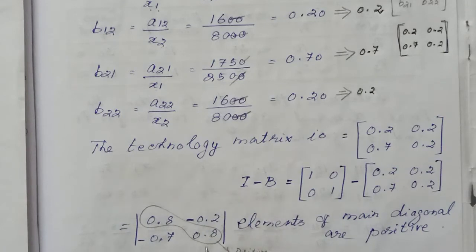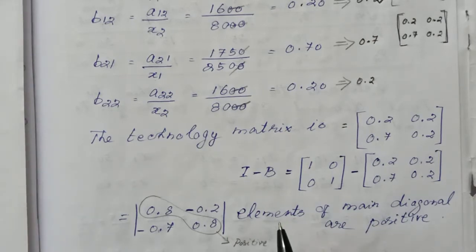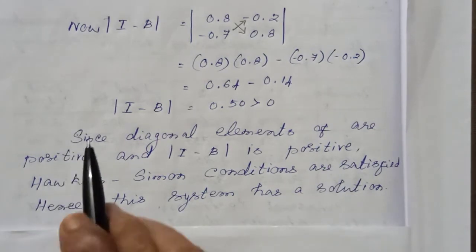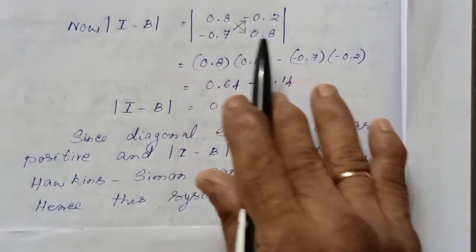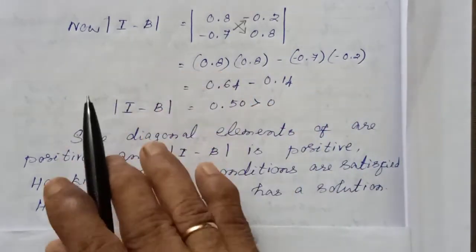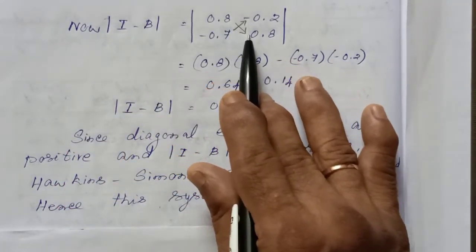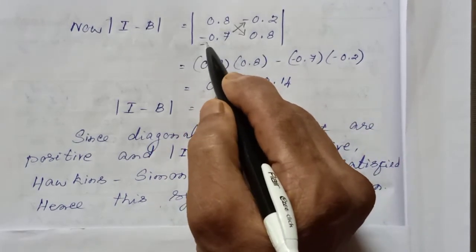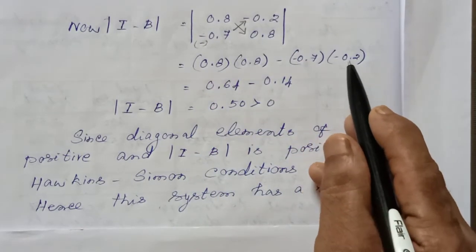The elements of the main diagonals are positive. Now, I minus B in determinant form: the matrix I minus B has diagonal element 0.8, with off-diagonal elements minus 0.7 and minus 0.2.